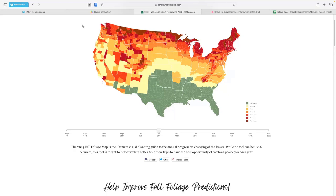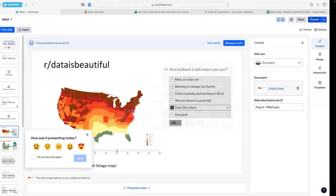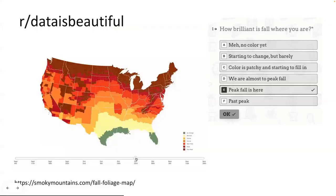The method of data collection here was actually quite simple. If you have a play around with the website, you can see that they have an online form where they collect info about the foliage status across the counties of different US states. Quite a nice, simple, but topical one to start with. Let's move on to a more sophisticated example.